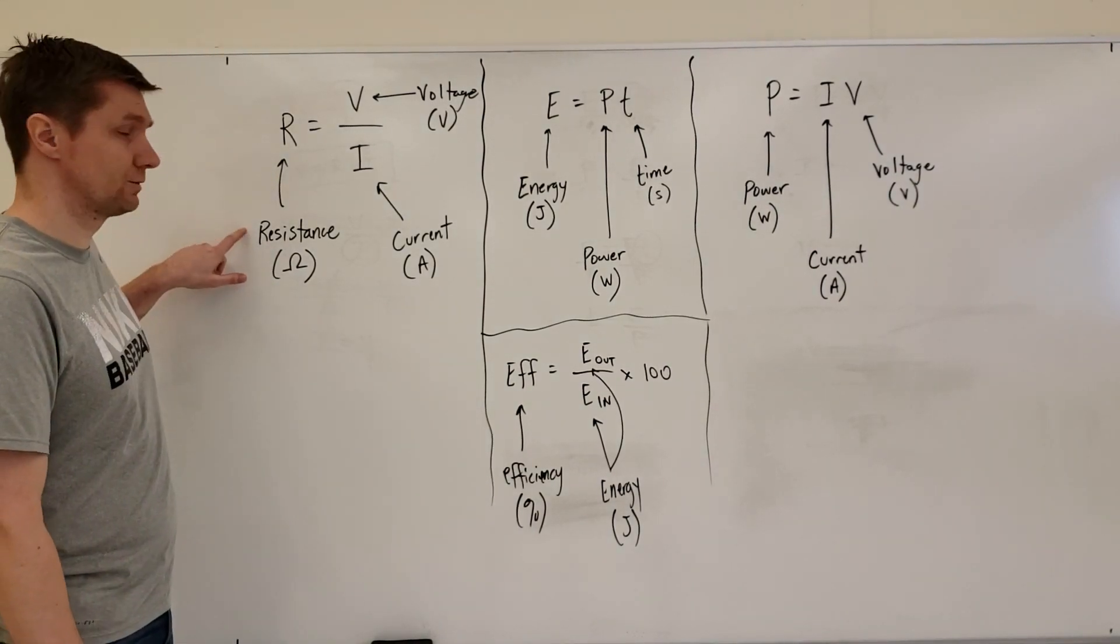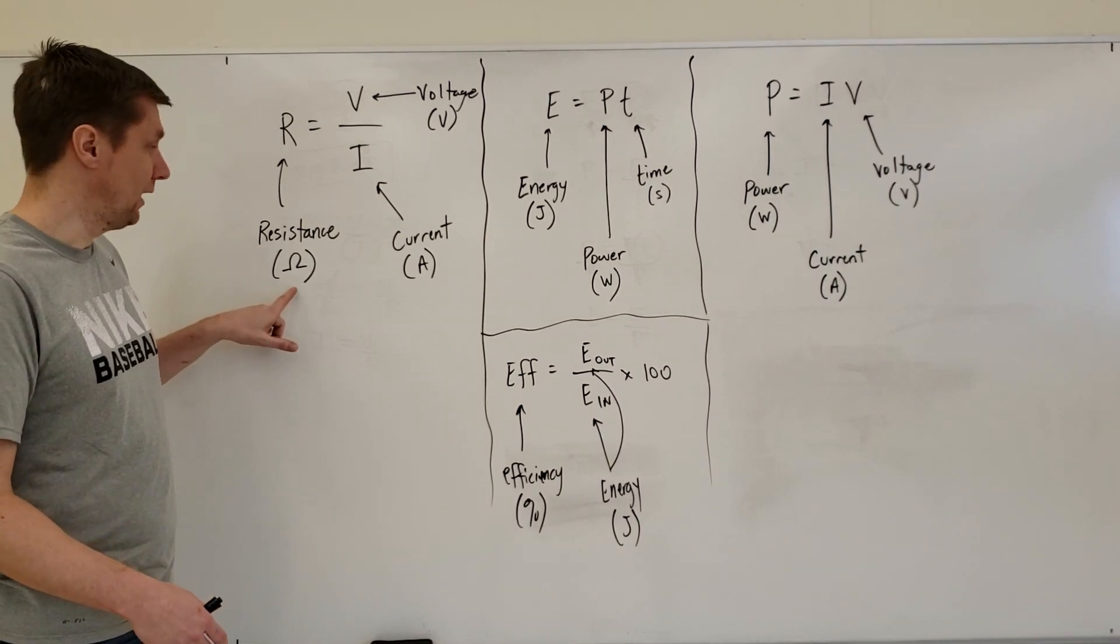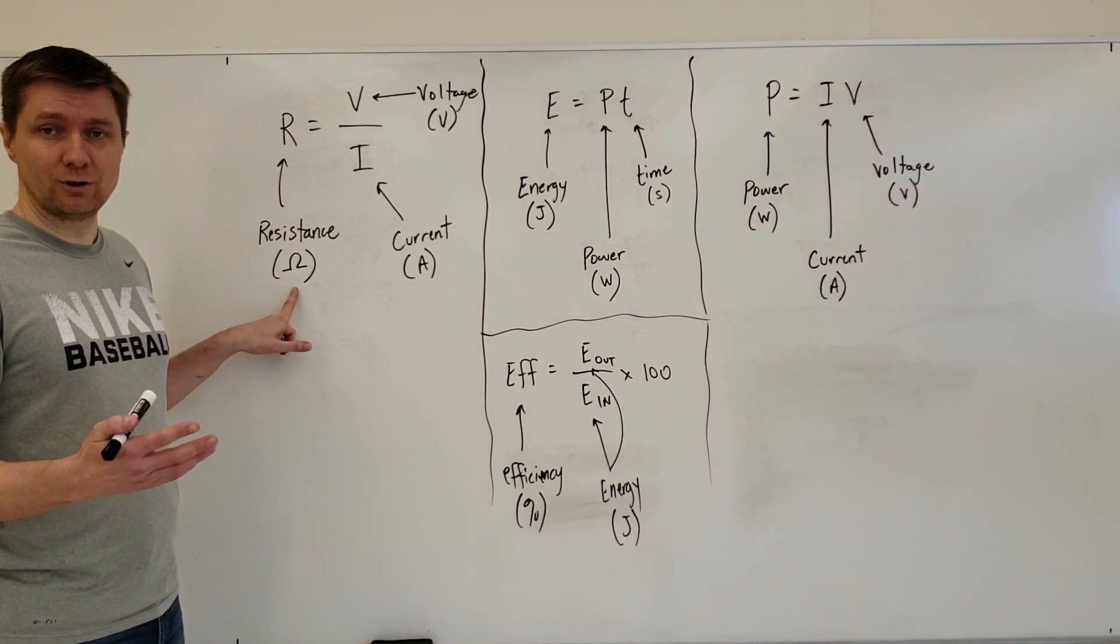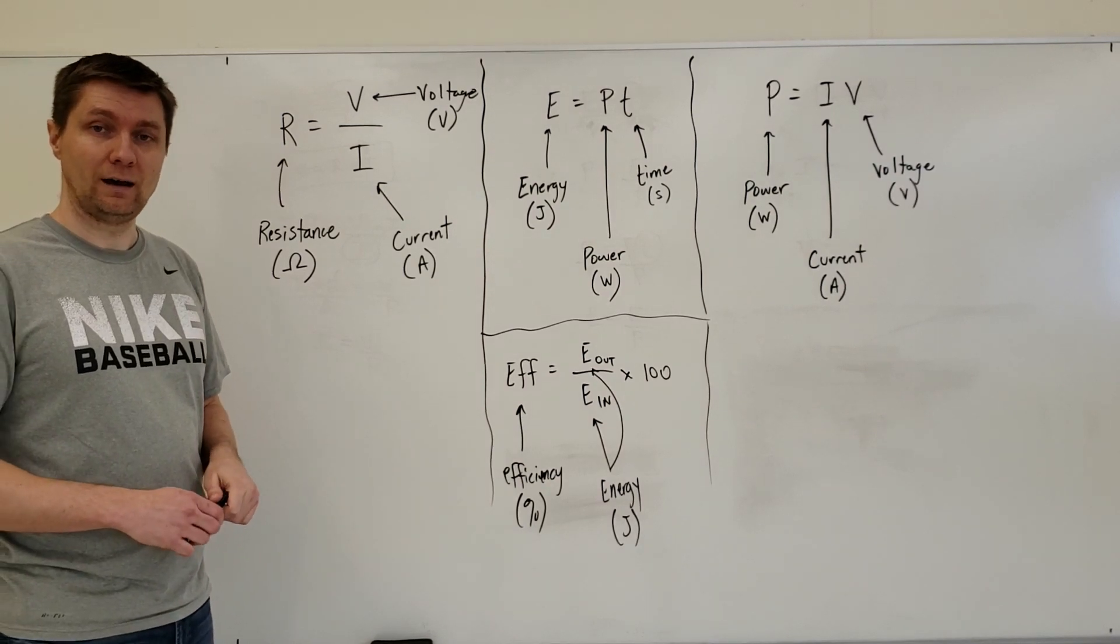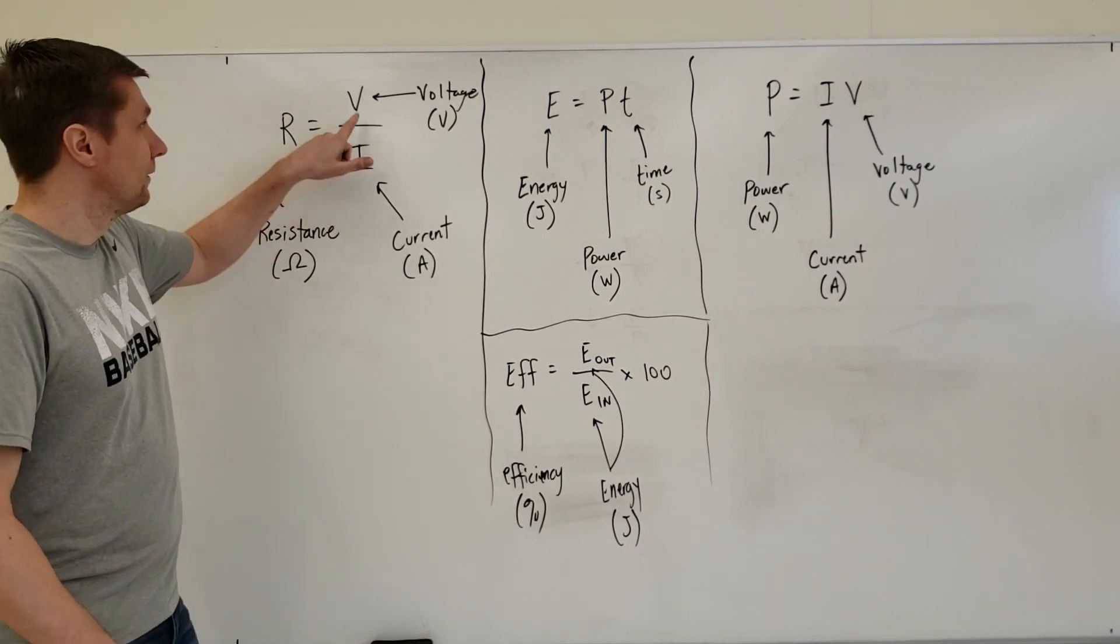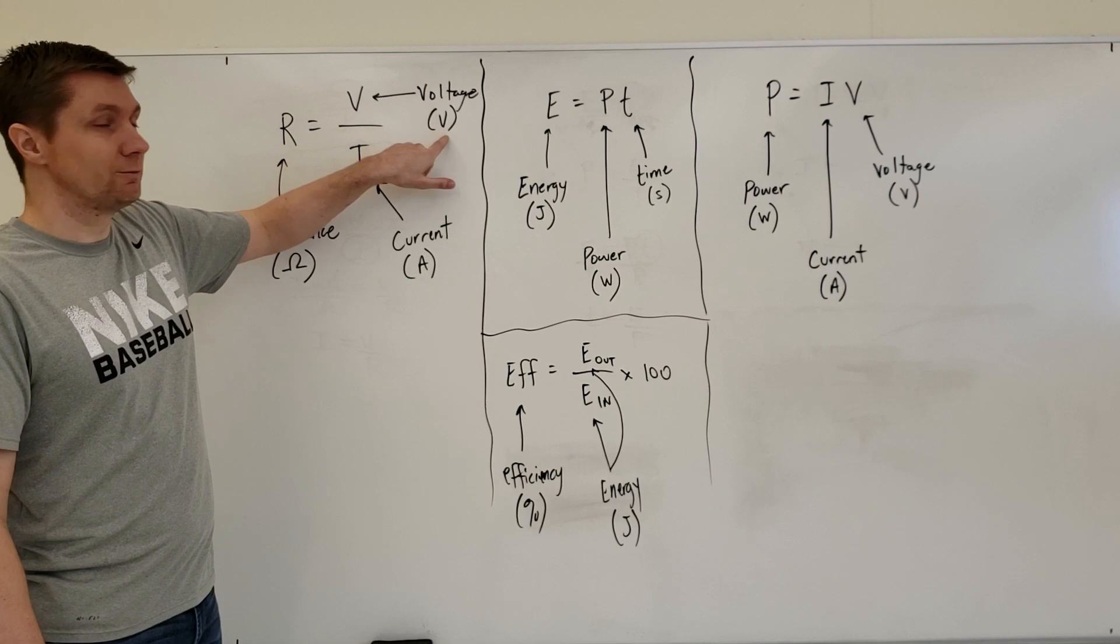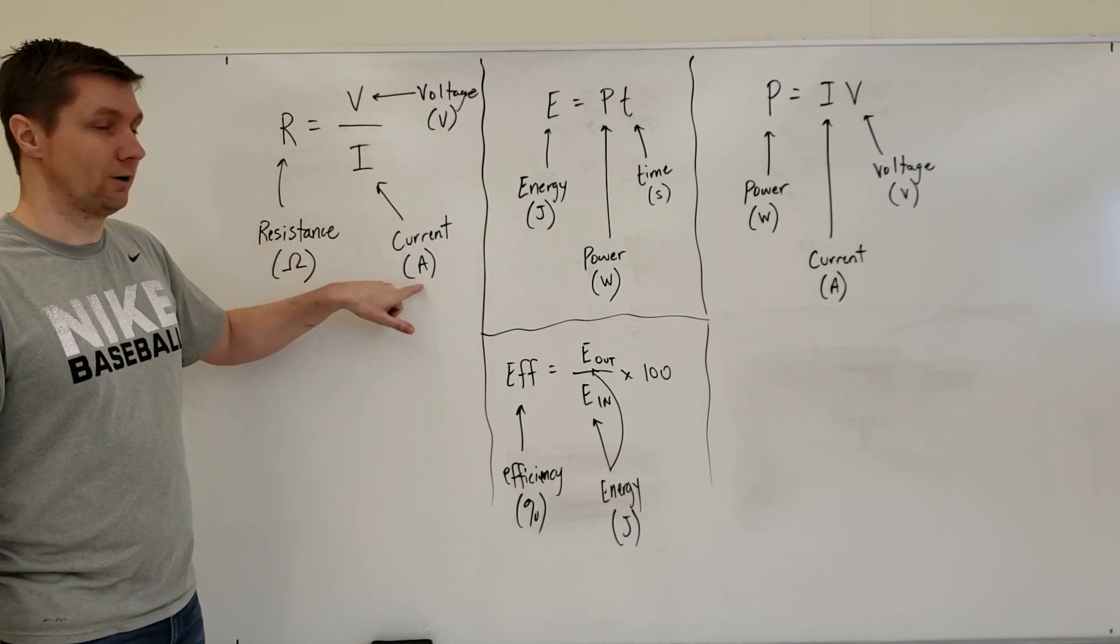R represents resistance of a circuit, measured in units of ohms, denoted by the Greek letter symbol omega. V stands for voltage measured in volts, and I stands for current measured in amps.